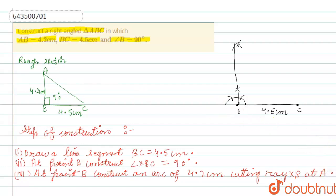Aap kya karna hai? B par, at point B we have to construct an arc of 4.2 cm and mark this point as A. Clear?